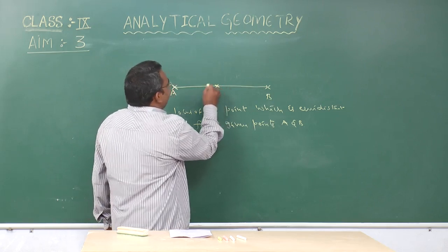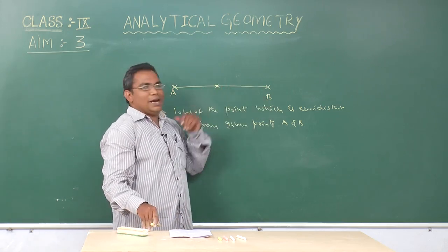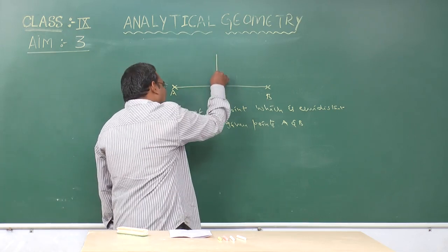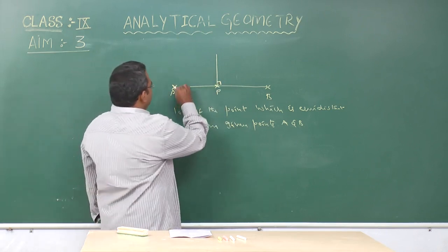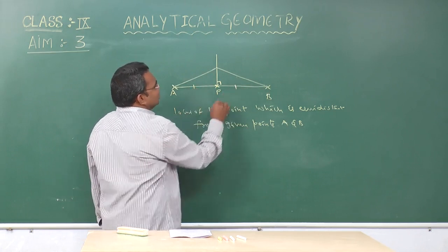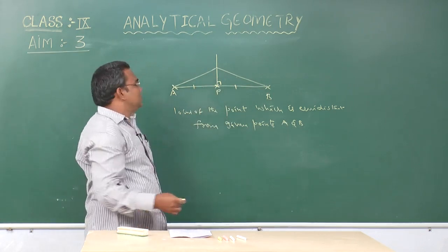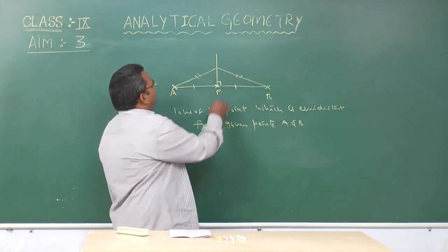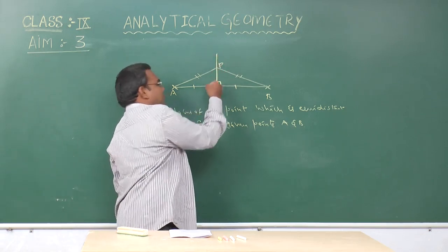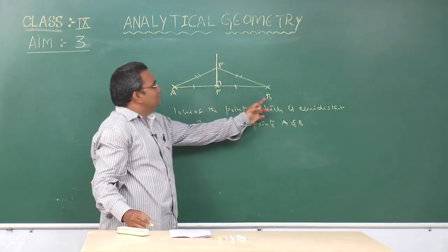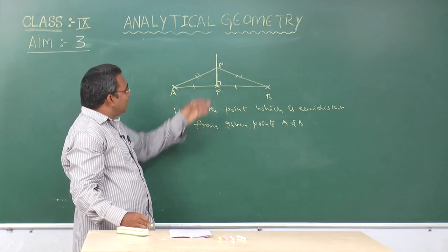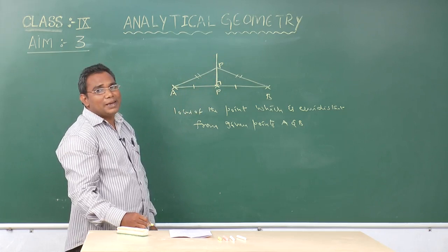We know that the midpoint of line segment AB is equidistant from A and B. The point lies at the midpoint of AB, and drawing a perpendicular at that midpoint — this distance and this distance are equal, and this is the common side. Hence, this distance and this distance are also equal. P is any point on this line, which passes through the midpoint of line segment AB and is perpendicular to AB. Hence, the required locus is a straight line, and this line represents the perpendicular bisector of AB.